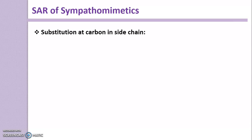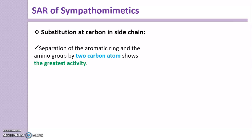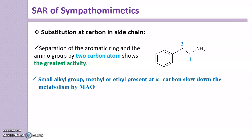Moving to substitution at carbon in the side chain. Separation of the aromatic ring and the amino group by two carbon atoms shows the greatest activity — as seen in the Beta-Phenylethylamine common structure, where two carbons lie between the amino group and the phenyl ring. Increasing or decreasing the chain length of the side chain produces an inactive compound.